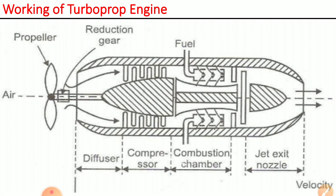Now we will see the working of the turboprop engine. It also works on the open cycle gas turbine principle. The diffuser is a device placed at the front of the engine, before the compressor. The function of the diffuser is to slow down the incoming air.